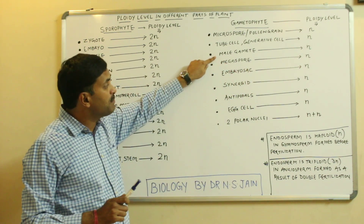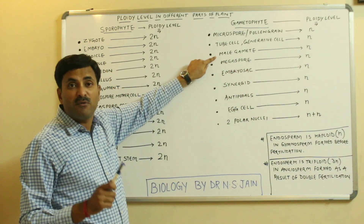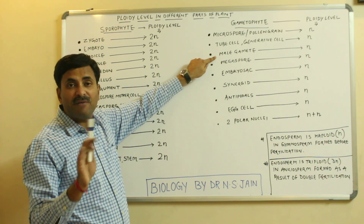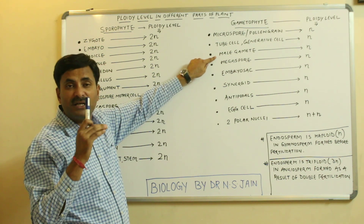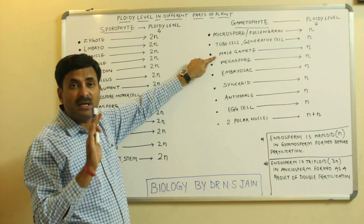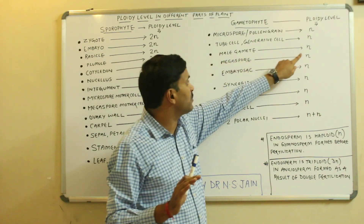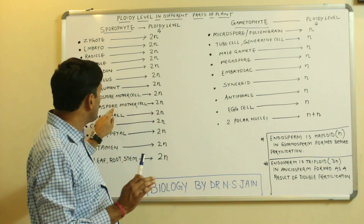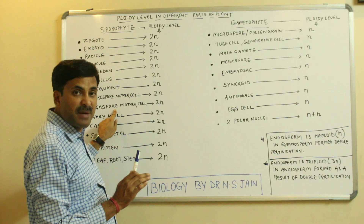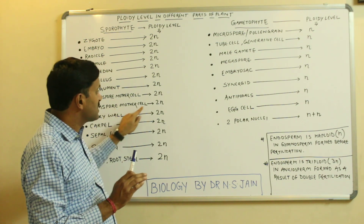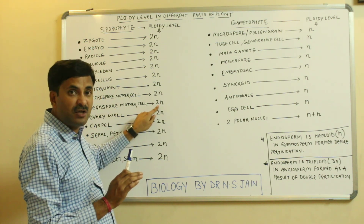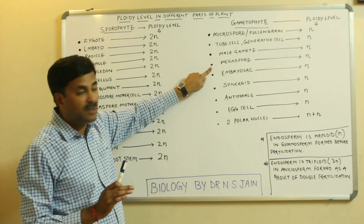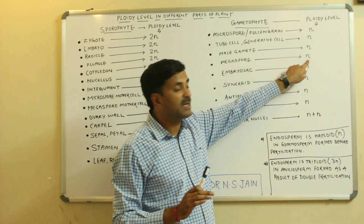Now, the male gamete — gametes are always haploid cells, whether it is a male gamete or a female gamete. So the male gamete is haploid. Now, megaspore — when the megaspore mother cell present in the megasporangium divides by meiosis, it was a diploid cell, and when divided by meiosis, megaspores are formed, which are definitely haploid.